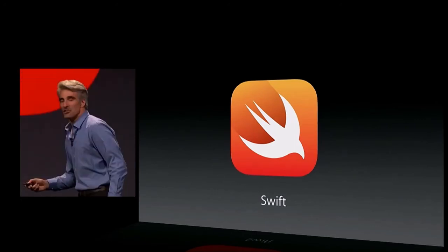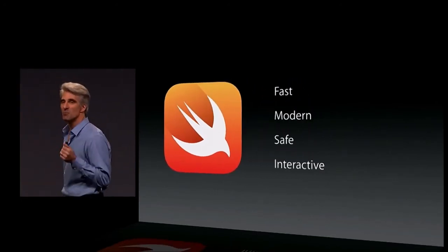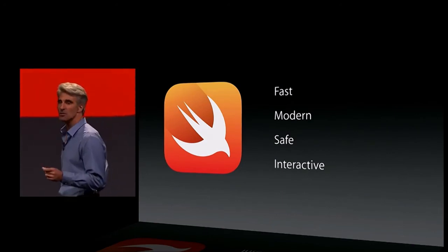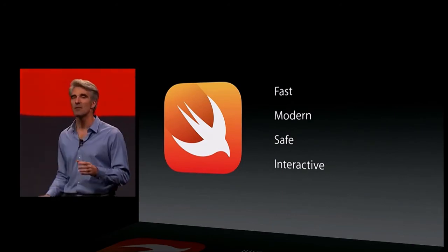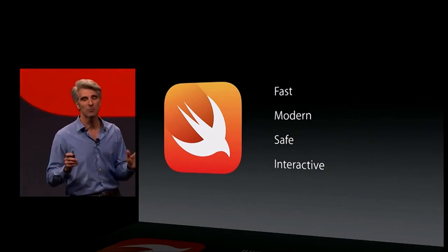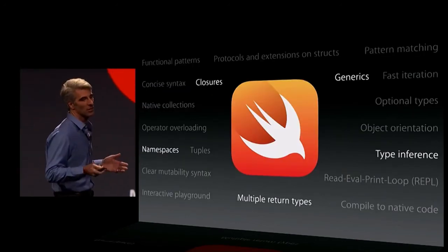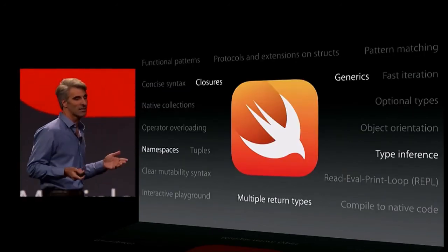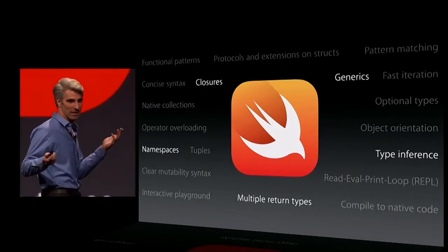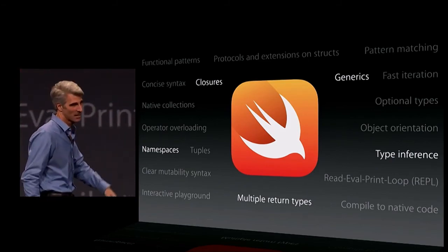We have a new programming language called Swift, and it totally rules. Swift is fast, it is modern, it is designed for safety, and it enables a level of interactivity and development that you've never seen on the platform — with features like closures, generics, type inference, multiple return types, and namespaces.